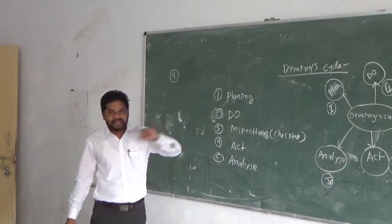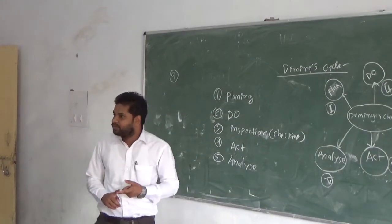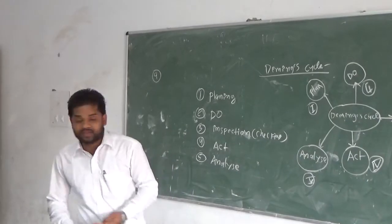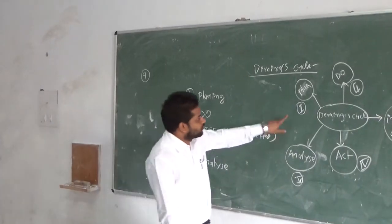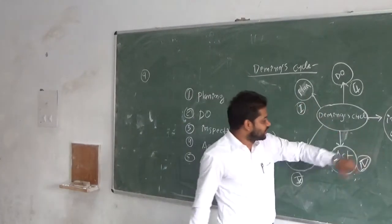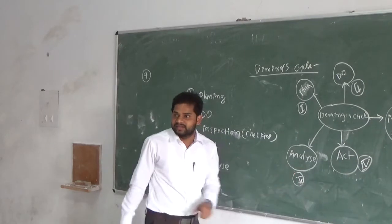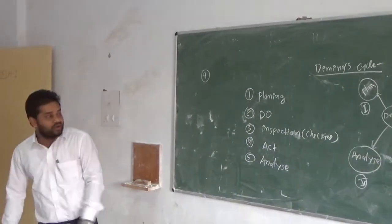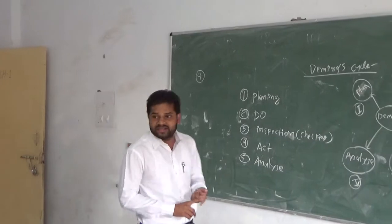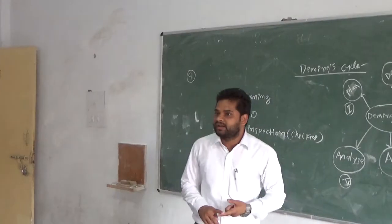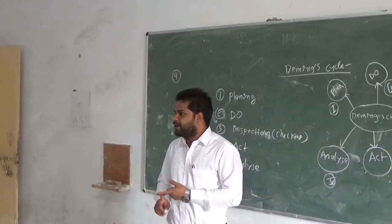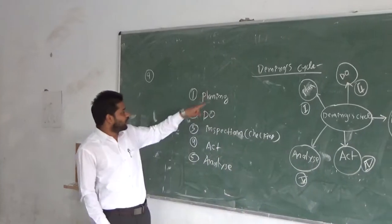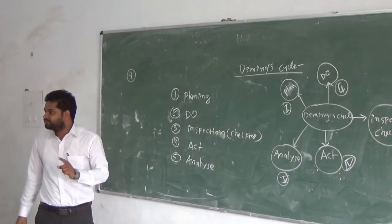In the daily cycle, the key point is just how can we receive the product easily. So: Plan, Do, Inspection, and Analyze — there are 5 points in the Deming cycle. In your university examination, the question will ask: What is the Deming cycle? Explain in brief. So you list all 5 points and explain one by one.